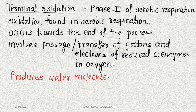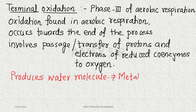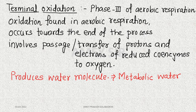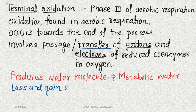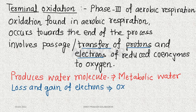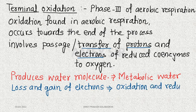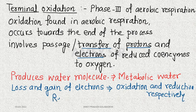When we talk about protons and electrons, there are two things involved — loss and gain. If electrons are lost, it is oxidation. If electrons are gained, it is reduction. This means that the terminal oxidation process is basically a redox reaction sequence.